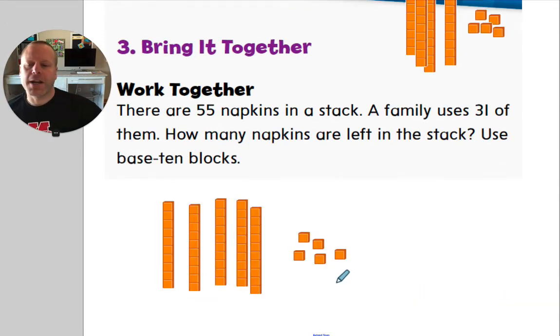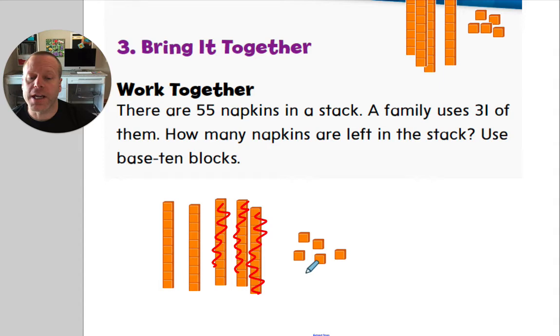Here is another strategy that we can give you. Sometimes if you're doing a subtraction and you have the base 10 blocks. So there are 55 napkins sitting on the table and a family uses 31 of them. So 10, 20, 30, 1. So 55 take away 31 leaves 10, 20, 4. So using the blocks. Using the number line.